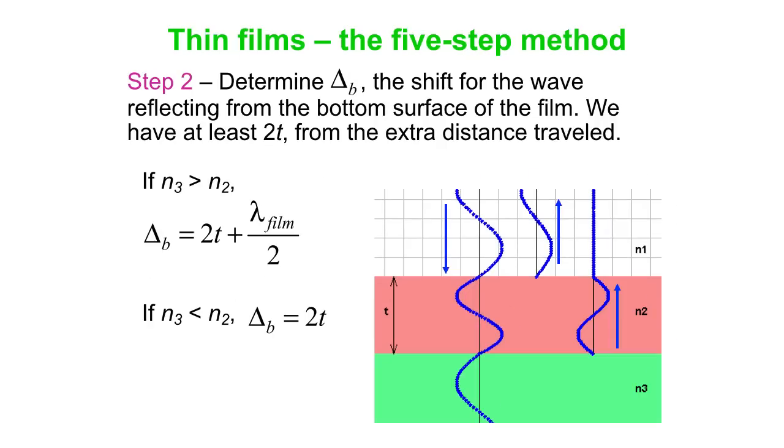Then we focus on the wave that goes into the film, reflects off the bottom surface, comes back. Automatically it goes an extra distance of 2t compared to the one that reflects off the top surface. Then you either add half a film wavelength or you don't. You do add it if N3 is bigger than N2 because that flips the wave upside down. If N3 is less than N2, then you don't add anything extra. So it's either 2t plus half a film wavelength or 2t.